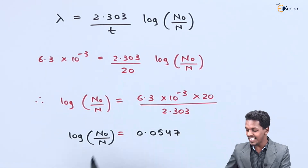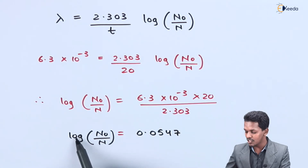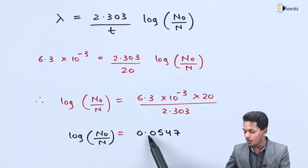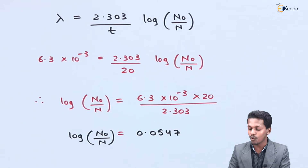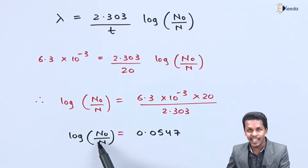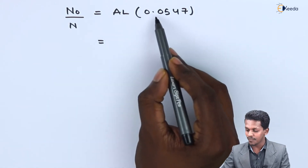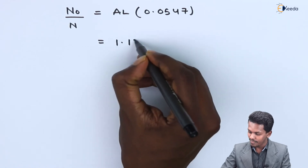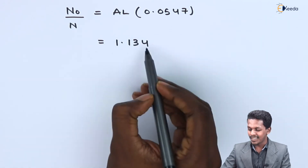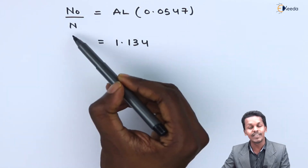We need the value of N₀/N, not just its log. Taking the antilog of 0.0547: N₀/N = antilog(0.0547) = 1.134. This is the ratio of initial to remaining atoms.